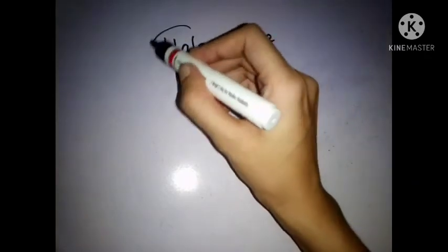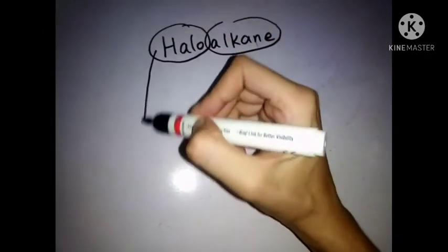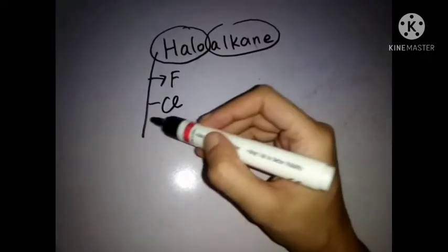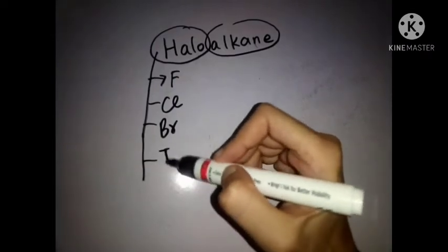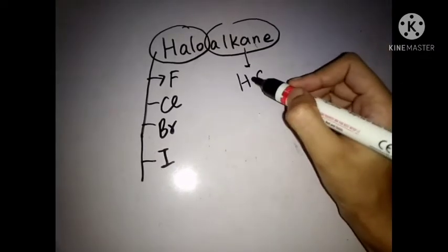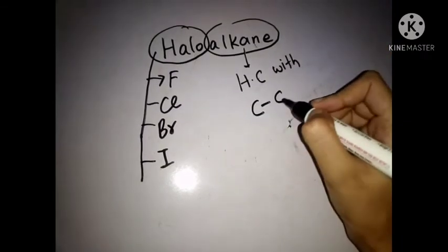Halo comes from the word halogens. Halogens are fluorine, chlorine, bromine, and iodine. These are the elements of 17th group, also known as halogen family. Alkane is hydrocarbons with carbon-carbon single bonds.